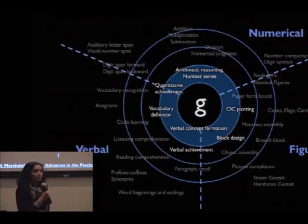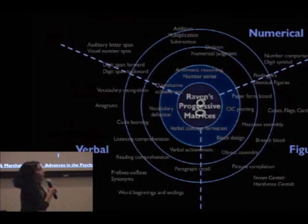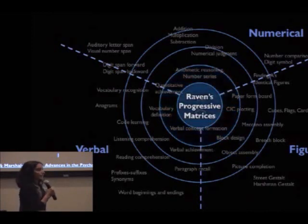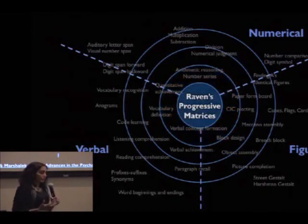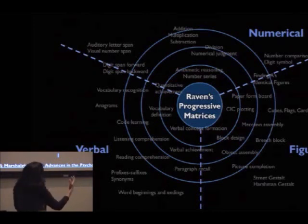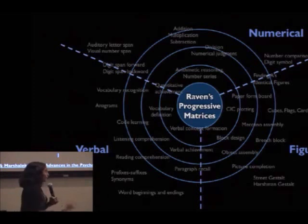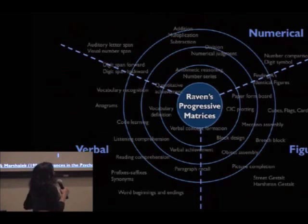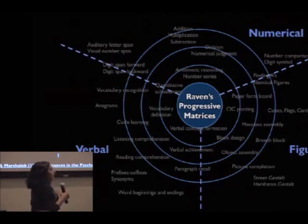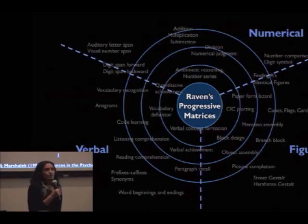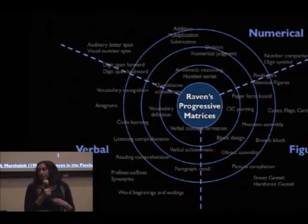It turns out that there's one kind of special task in the psychology literature that more than any other single task serves as a proxy for measuring general intelligence. Most tasks would only determine a person's numerical ability or visual ability. But there's this one task called the Raven's Progressive Matrices, which gives a very good proxy for general IQ. It was originally developed in the 1920s and 30s as a quick and dirty IQ measure.